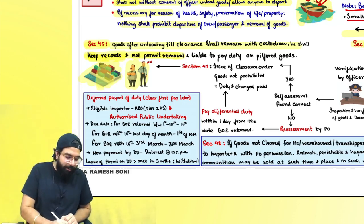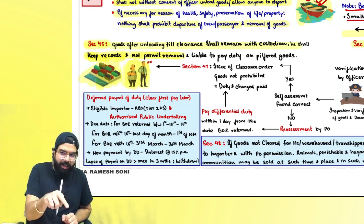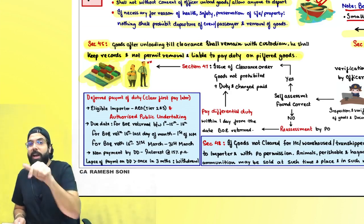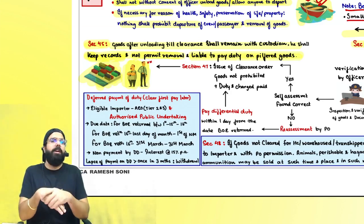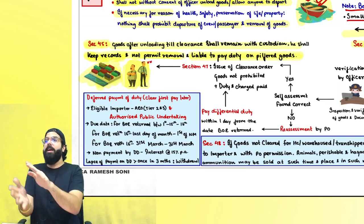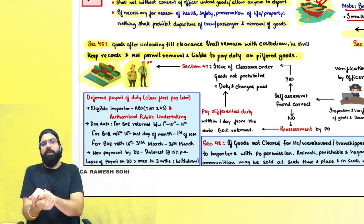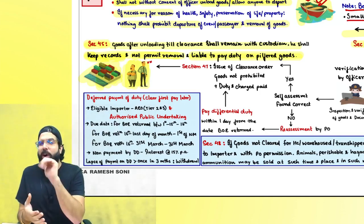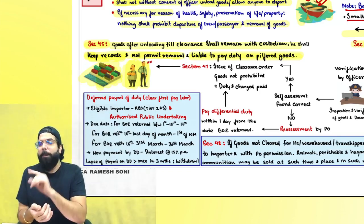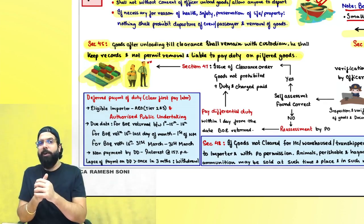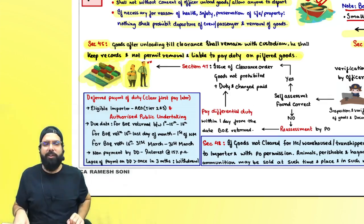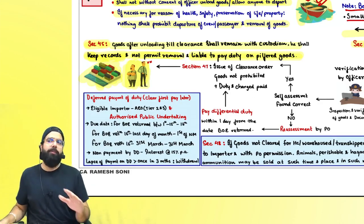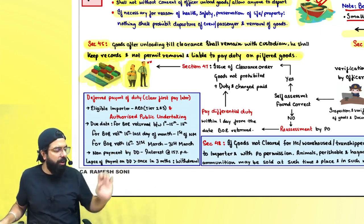If any goods are pilfered, the private custodian appointed under section 45 by the Commissioner will be liable to pay duty on the pilfered goods — because section 13 says the importer is not liable to pay duty on pilfered goods. However, a custodian appointed under the Major Port Trust Act is not liable to pay duty on pilfered goods, but being the bailee of the goods, is liable to pay the value of goods to the importer if there is any loss.